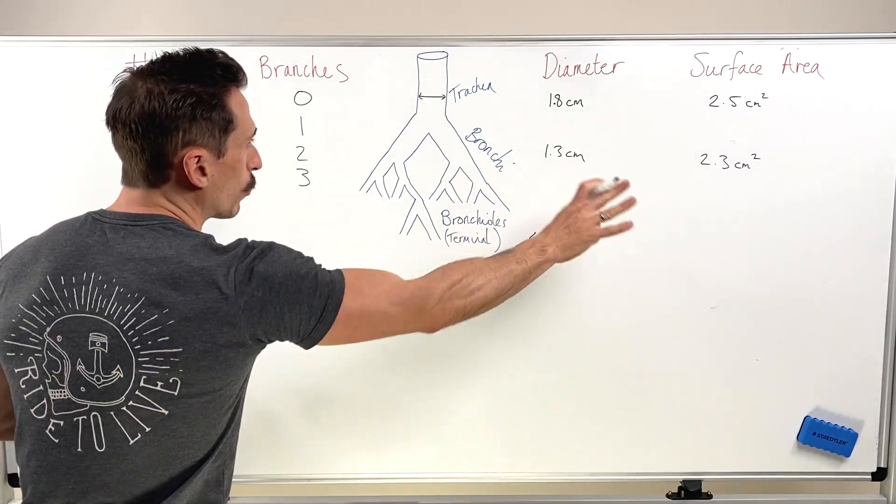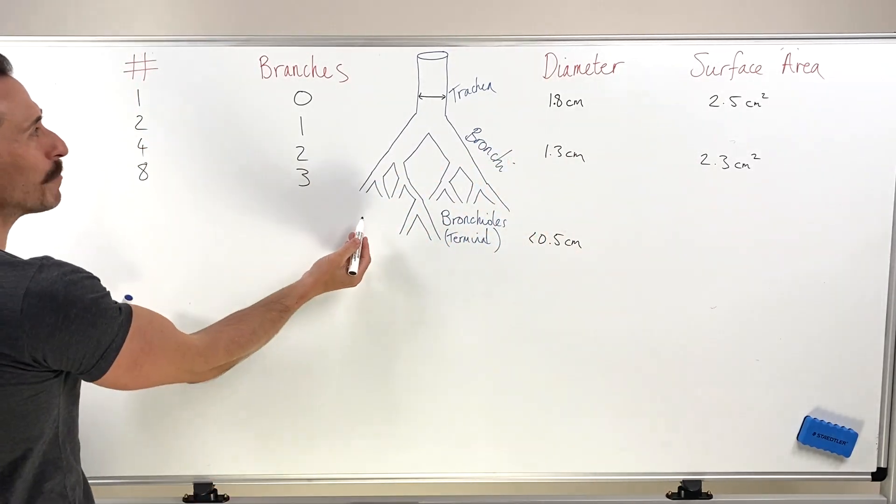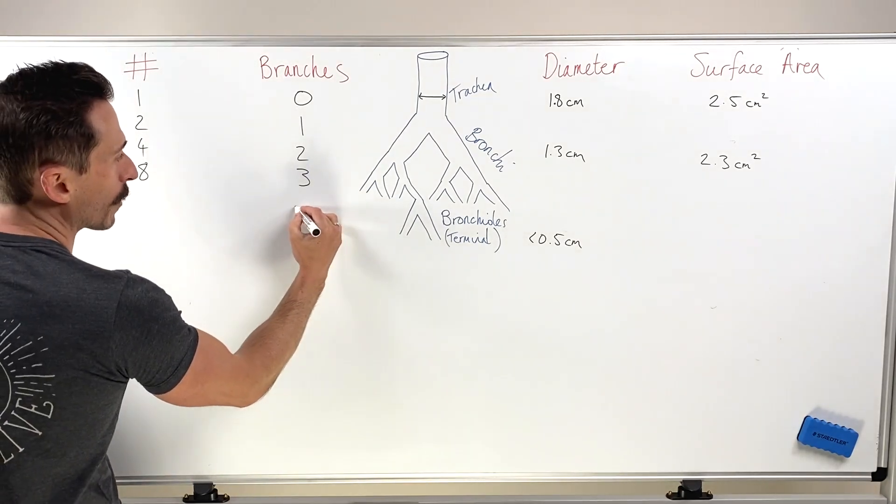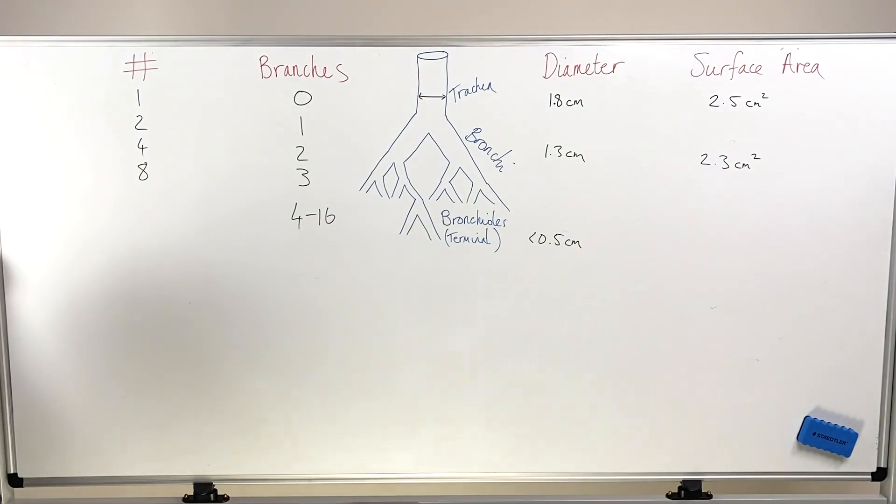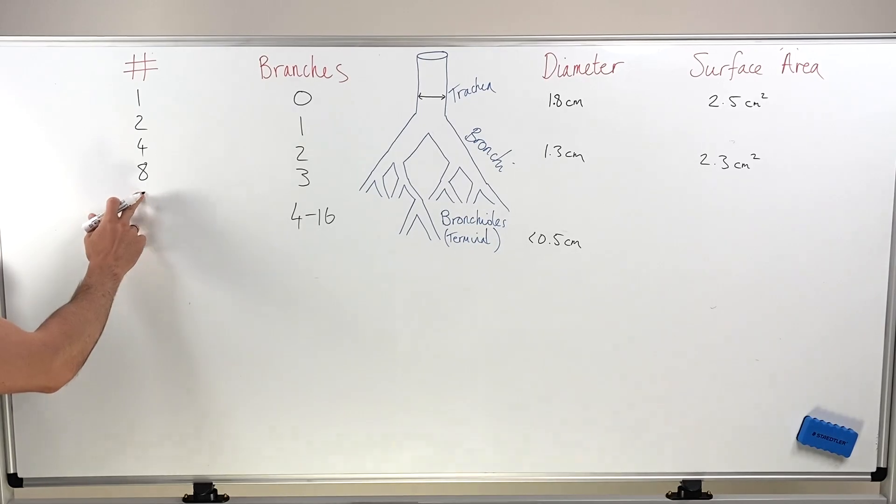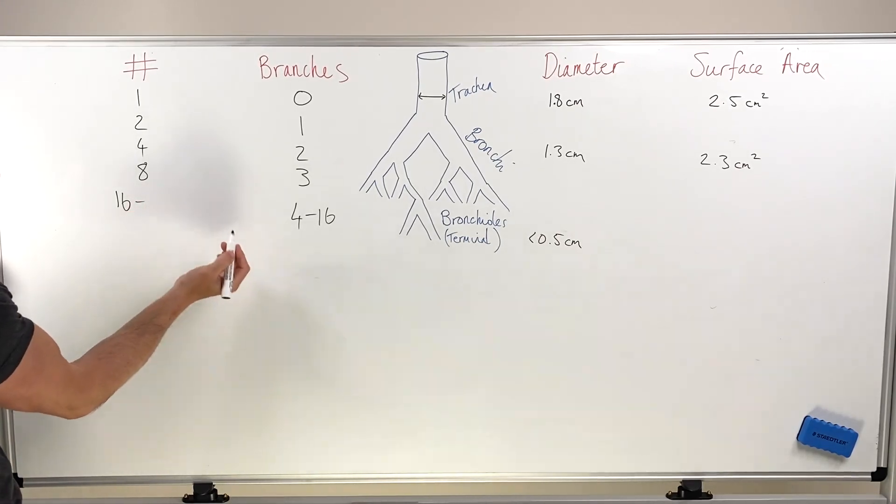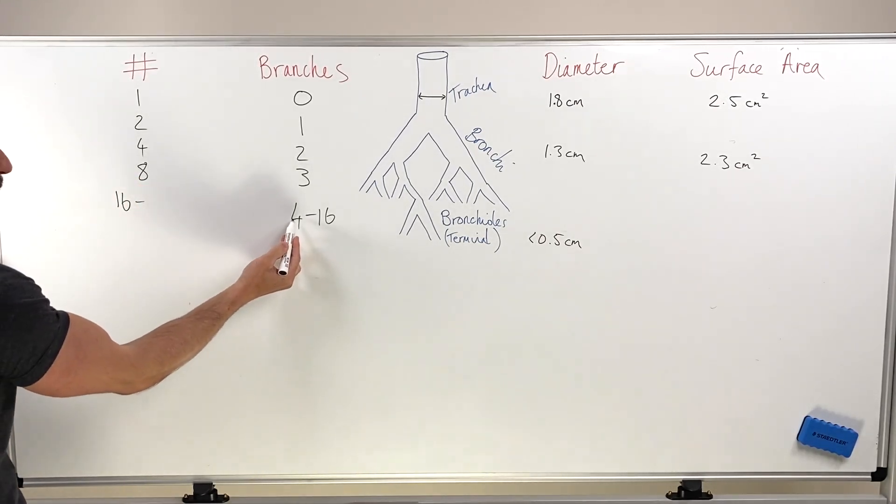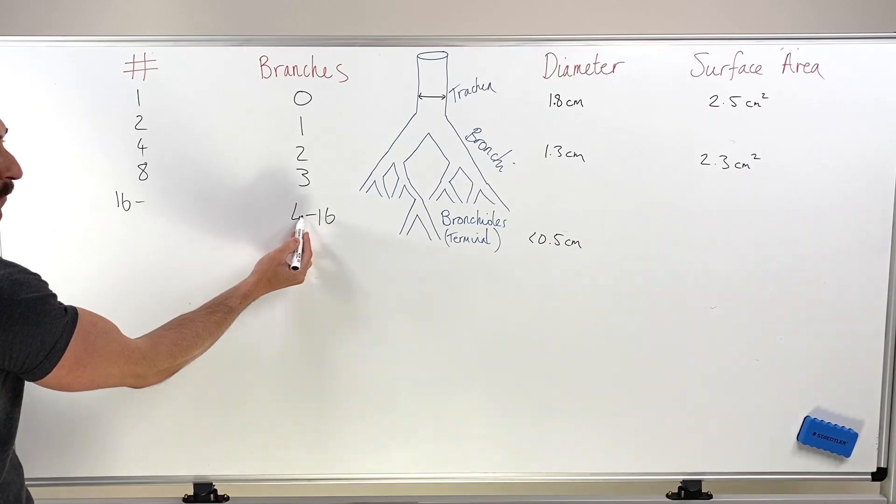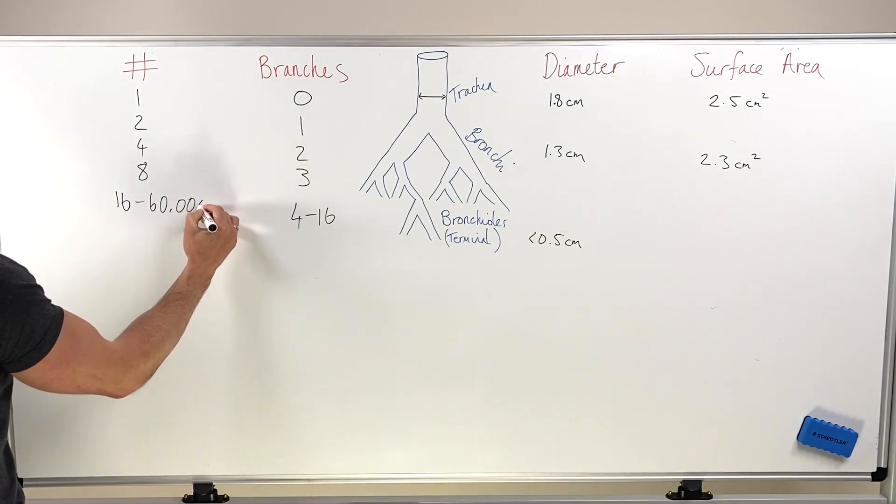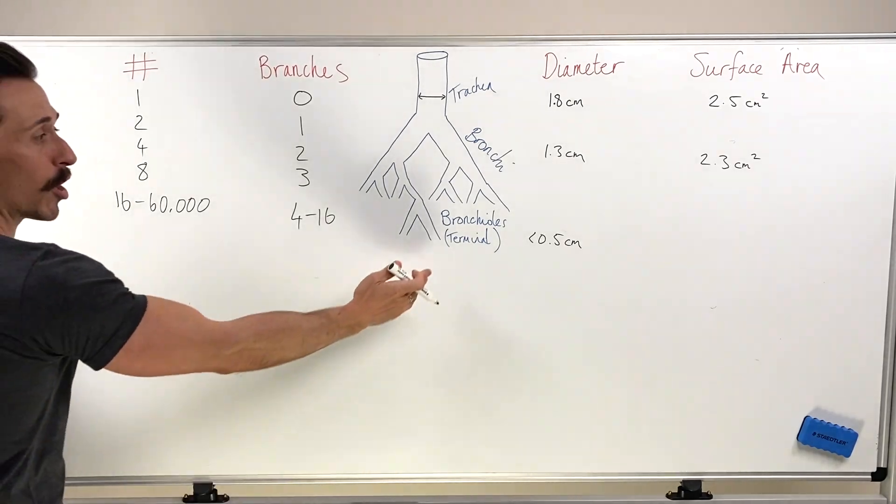How many times does the bronchioles split off? Well, we'll split off from 4 to 16 times. Now in that time, how many branches do we ultimately get? Well, it's going to be the next 8 plus 8 is 16. So 16 branches all the way to, and if you calculate this, double this every time. From 4 to 5 is a doubling, from 5 to 6 is a doubling, all the way to 16.